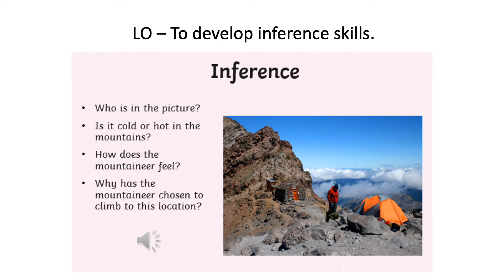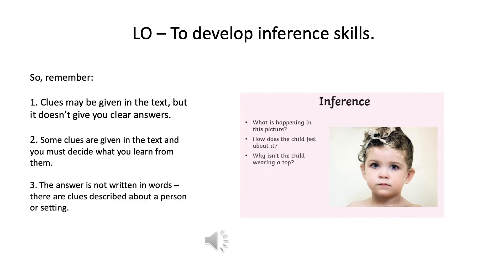A bit like in a text where we're looking around to see what's been described in words, telling us how someone responds or looks. So remember: number one, clues may be given in the text but it doesn't give you clear answers. Number two, some clues are given in the text and you must decide what you learn from them. Number three, the answer is not written in words — there are clues described about a person or a setting. You've got to find them, connect them, and come to your own decision as to how you can best answer an inference question.